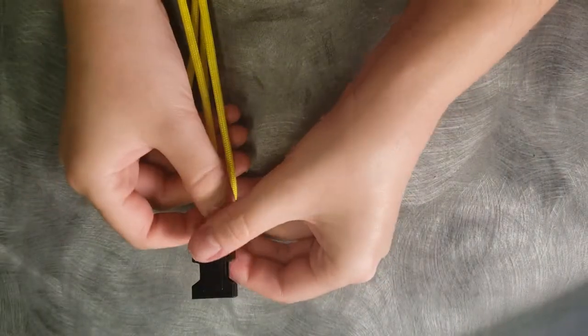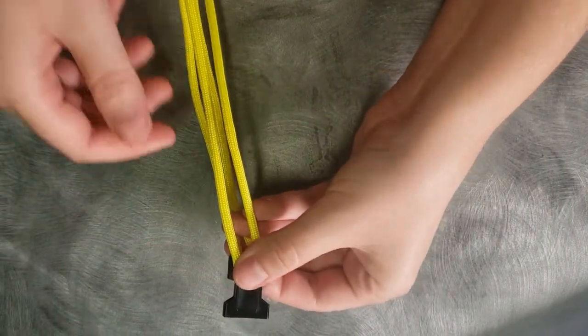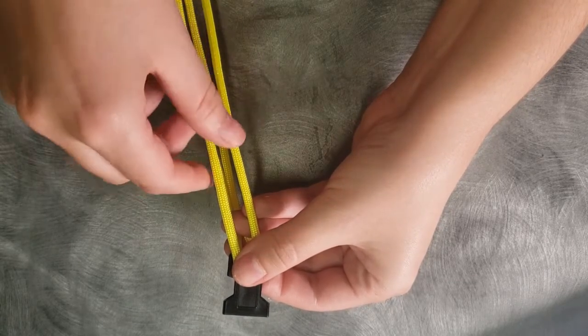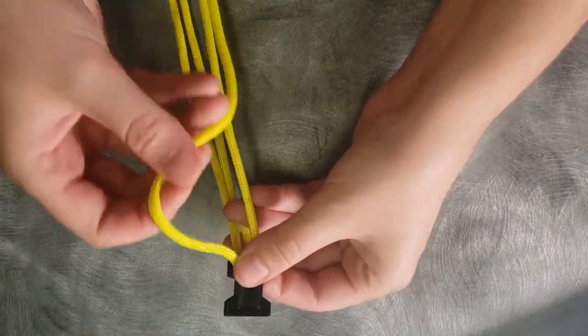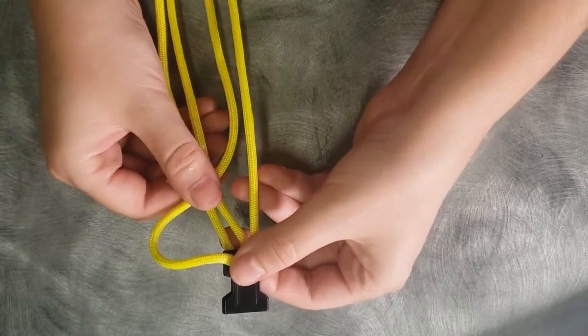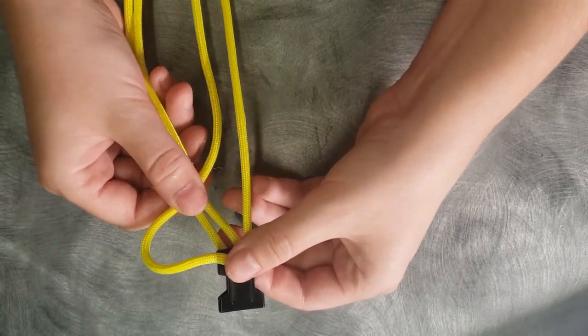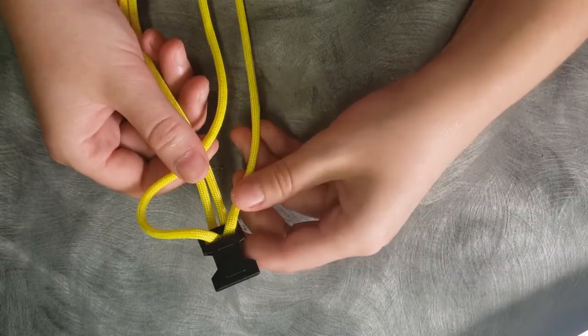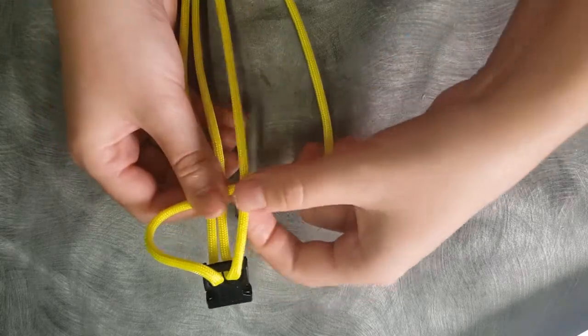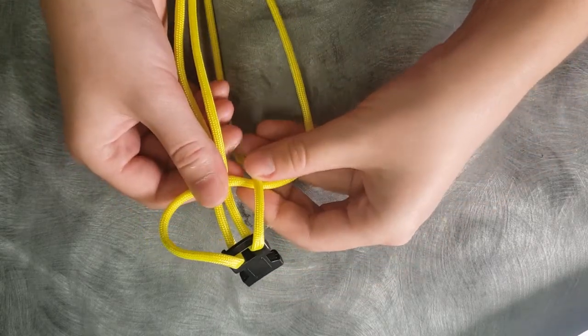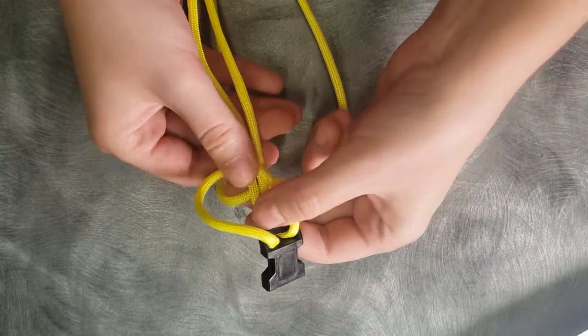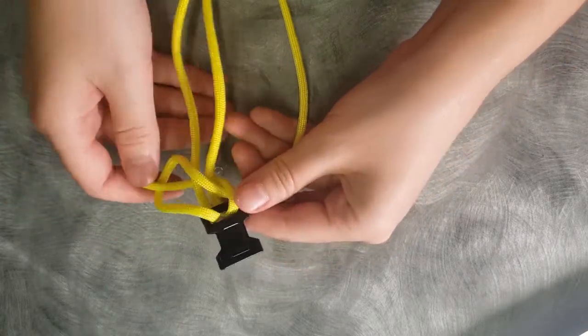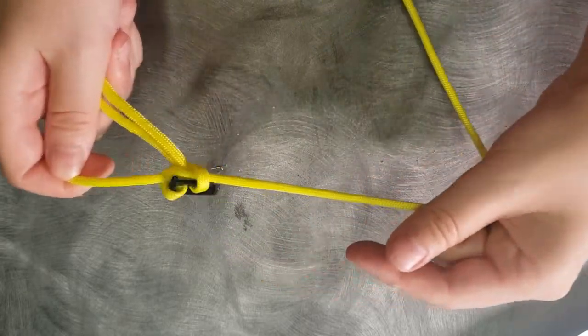Now, this is how we're going to start. We have our bracelet and our extra long strands. Take one, make a loop with it that goes over the two bracelet strands. Take the other side, put it over the strand, and then through the loop. Then pull it tight.